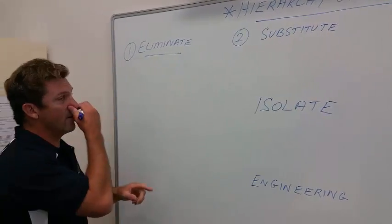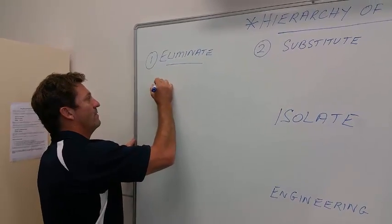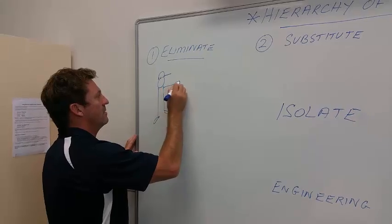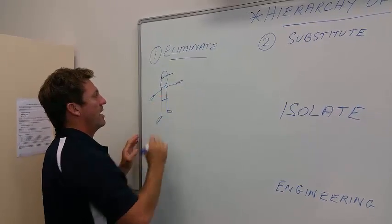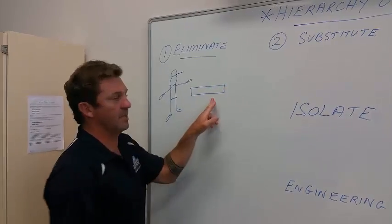Alright, so number one, we'll start with elimination. Now I'm going to explain this as an example with Joe the carpenter, and he needs to cut a piece of timber, say a stud going on the wall.